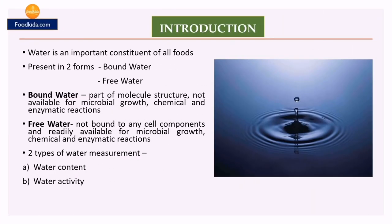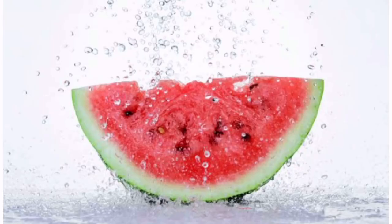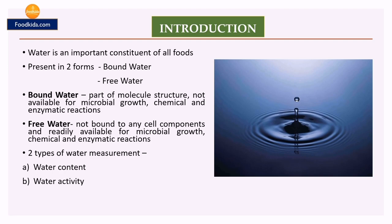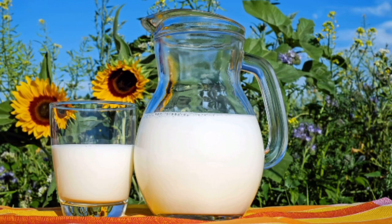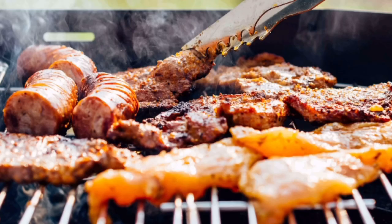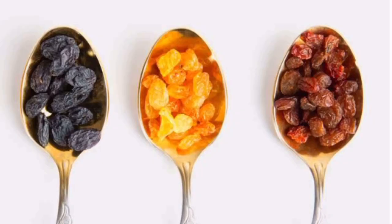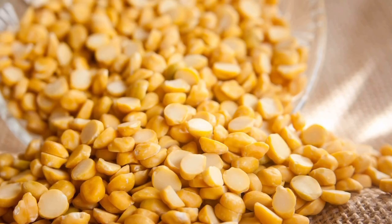Before getting into the water activity concept, let's talk about the importance of water in food. Water is one of the most abundant components found in food. About 90% or more of water is present in fruits and vegetables; in milk it is 87%, and in meat it is 60 to 75%. Even dried foods such as figs and raisins contain 20% water, and dried pulses, cereals, and flour also contain appreciable quantities of water.